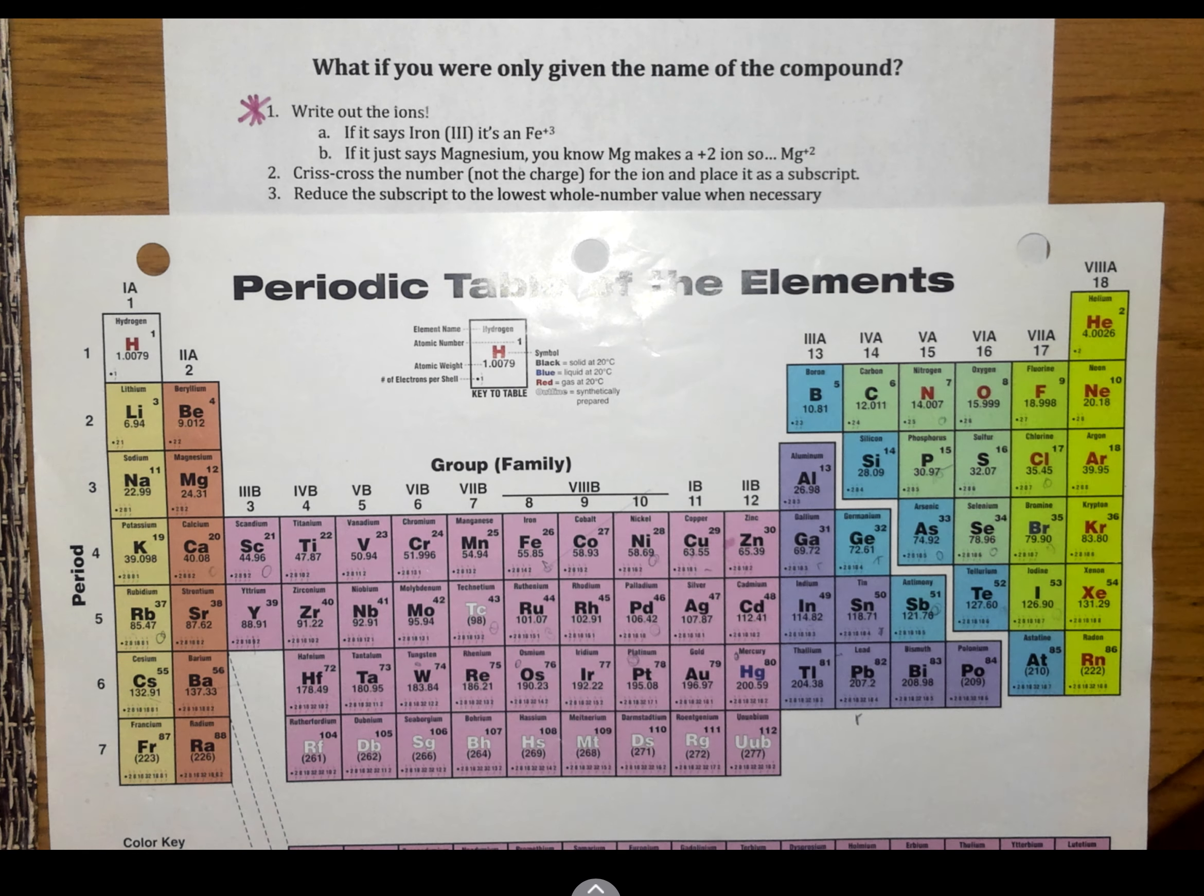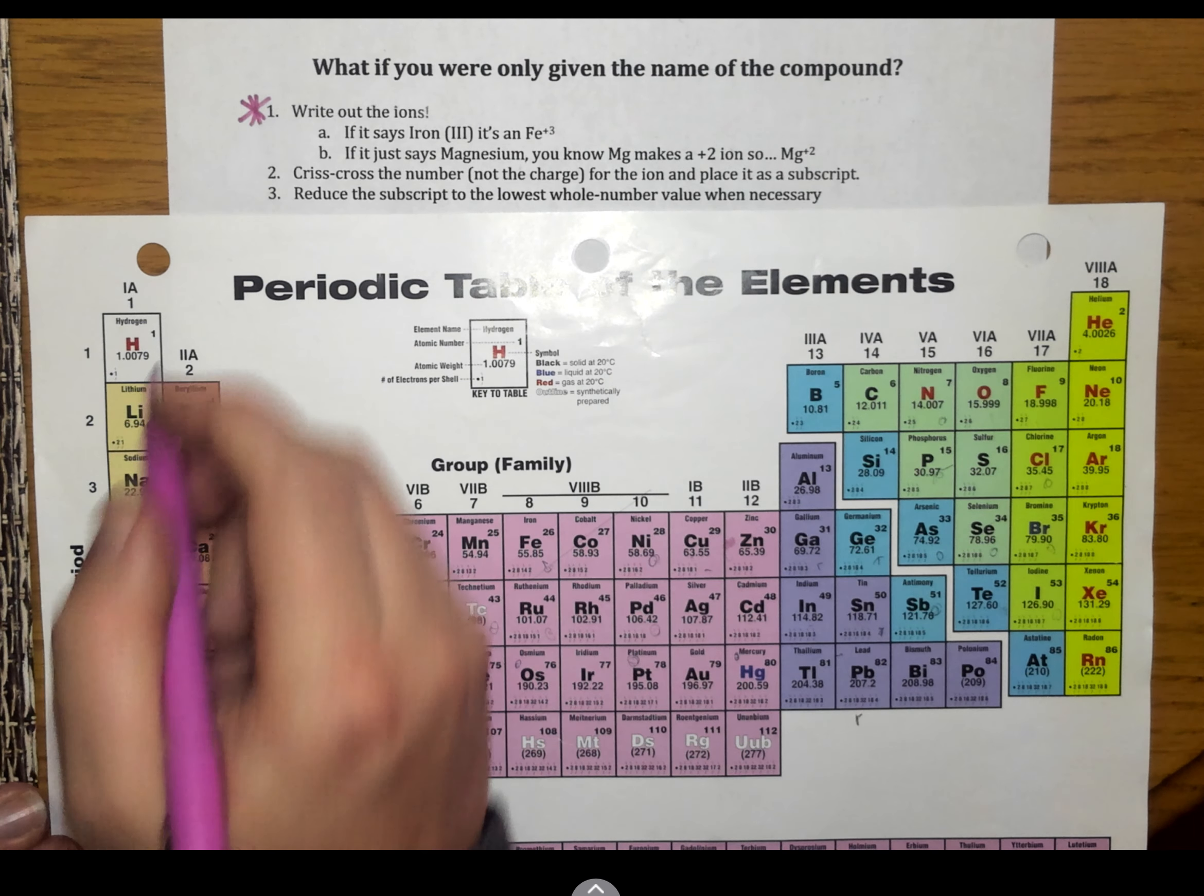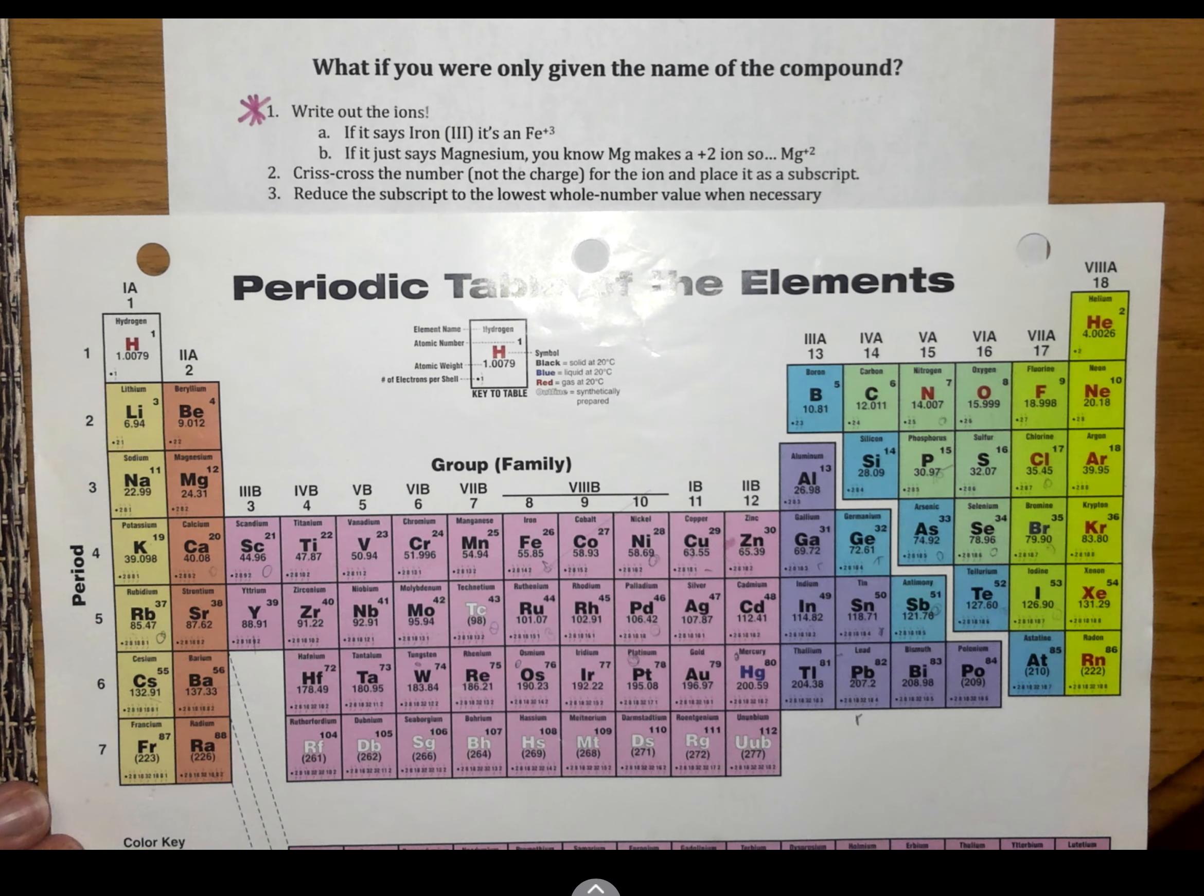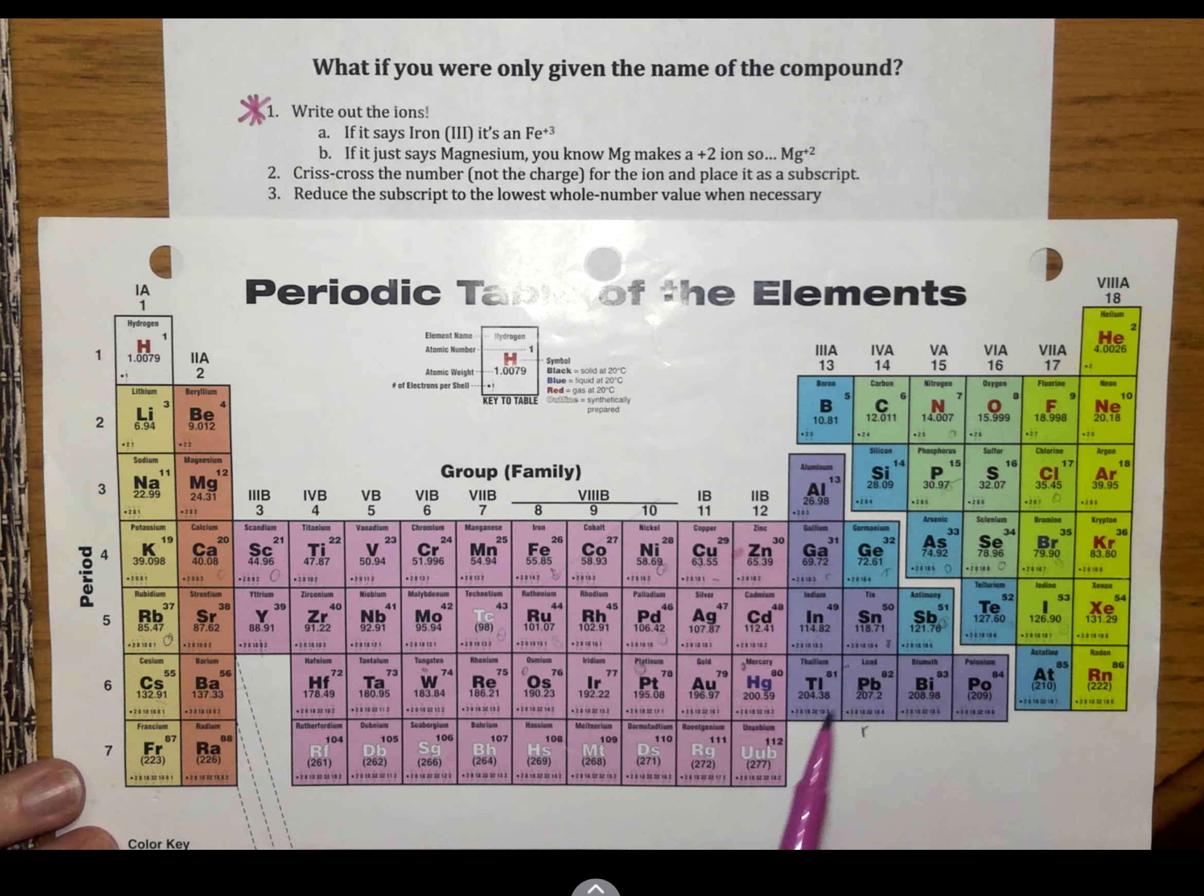Now, the most essential step of this entire process, and I cannot emphasize this enough, is write out the ions. So, depending on the compound, sometimes it tells you the charge right in the problem. Those make your life pretty easy. Other ones, you might have to reference your periodic table.